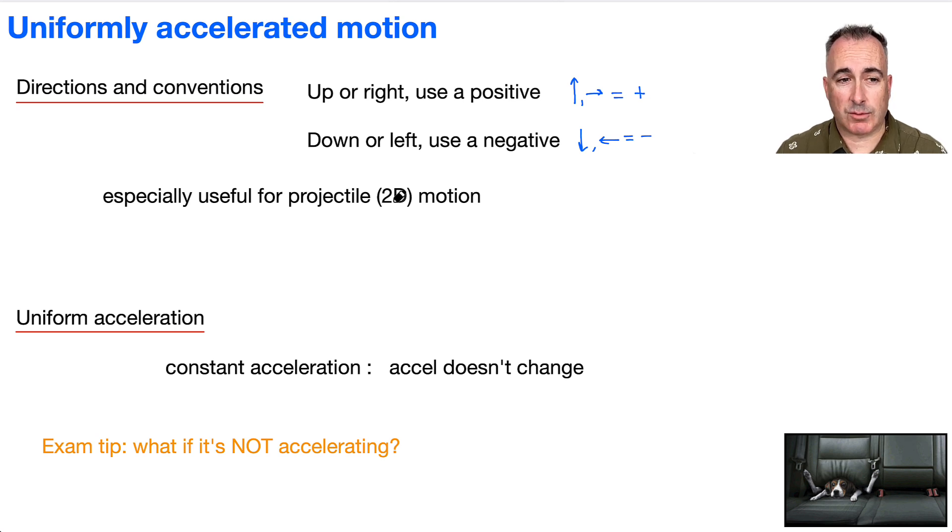This is especially useful for 2D, when we do projectile motion as well. So what do we mean by uniform acceleration? Like I said, it's constant. The acceleration doesn't change. That's a key piece of information we need to know. But what do we do if it's not accelerating?